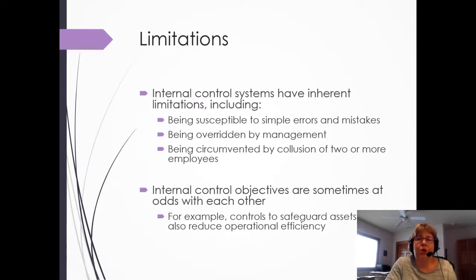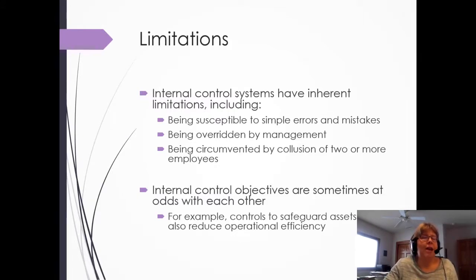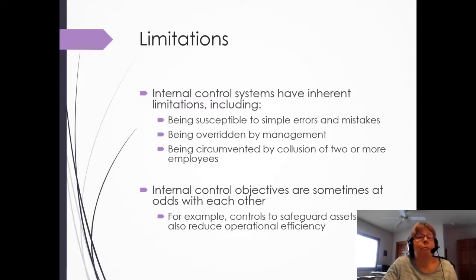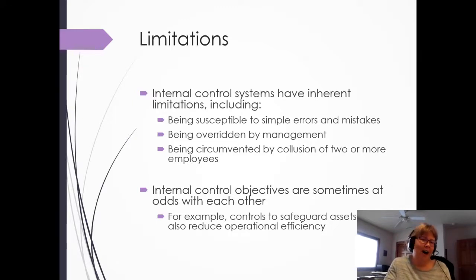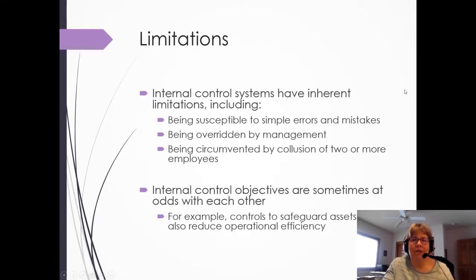Unfortunately, internal controls do have limitations. First are simple errors and mistakes — a lot of internal controls rely on human intervention and yes, we still make mistakes. With computer automation, some reviews can be done in a more automated manner to kick out exceptions for someone to review. Probably more dangerous is being overridden by management. If controls are in place but management says not to worry about them, nobody's going to take them seriously.